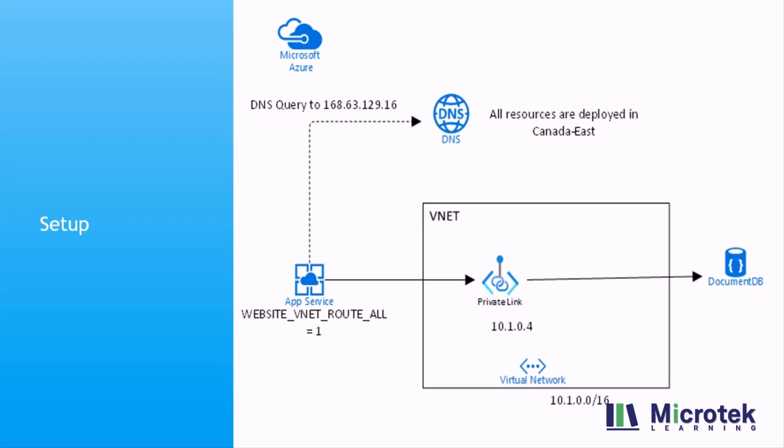Once that is done, let's review how the data flow happens. When the web app tries to access the DocumentDB, the DNS query will be forwarded to the private DNS zone, which in turn responds with the private IP address of the private endpoint. Since we have VNet integration in place, the web app tries to access the private link using its private IP. The packet reaches the private endpoint, and from the VNet the private endpoint accesses the DocumentDB using its private IP address. All communication is private, meaning you are now able to access the DocumentDB from the web app using private endpoint.